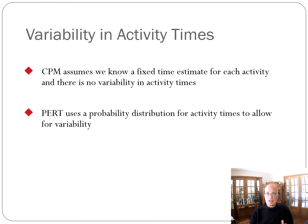As I said, there can be variability in activity times. Historically, the critical path method has assumed we know a fixed time estimate for each activity and there's no variability. PERT uses a probability distribution for activity times to allow for variability. Really, the only difference here is that we don't know definitively how long individual activities are going to take.